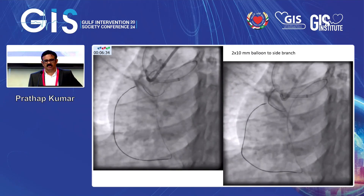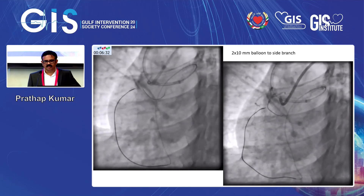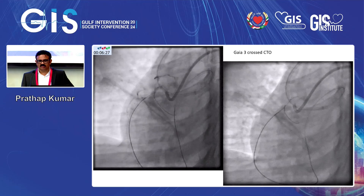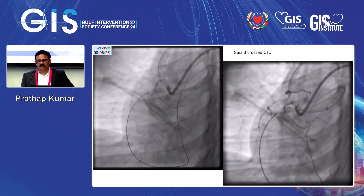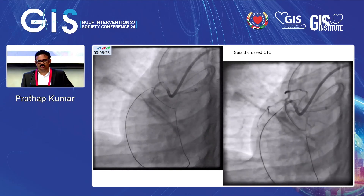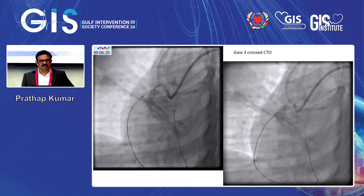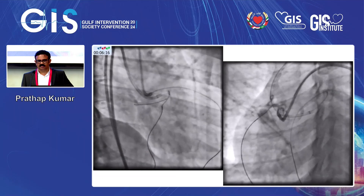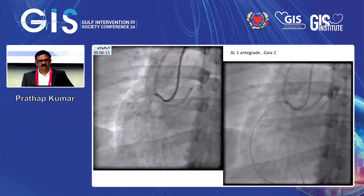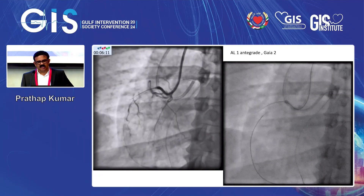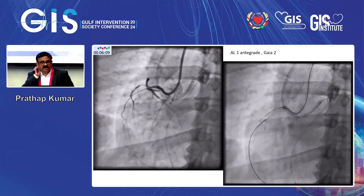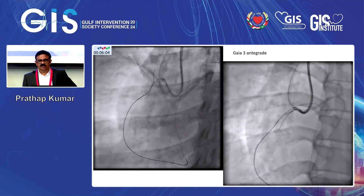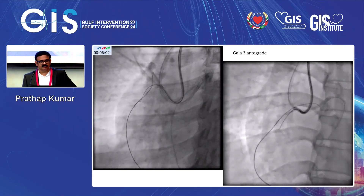Wire went. We took a 2x10mm balloon into the side branch to create angulation and support. The wire was still not reaching. Finally Gaiotri crossed the CTO, but once the wire crossed the CTO it was going out of the vessel. So we took different angles. We changed the catheter to AL1 anti-grade with the Gaiosecond wire anti-grade — we wanted to do a reverse CART. Gai3 anti-grade was not crossing.